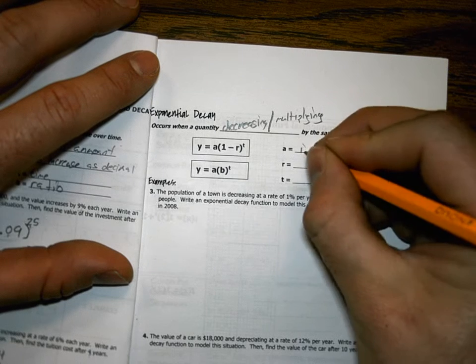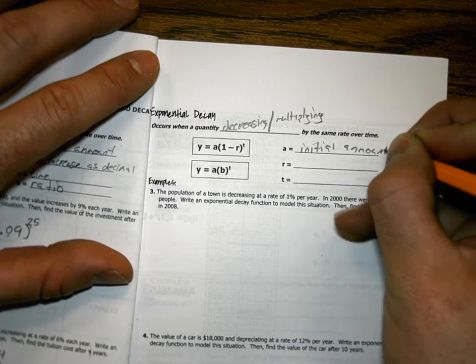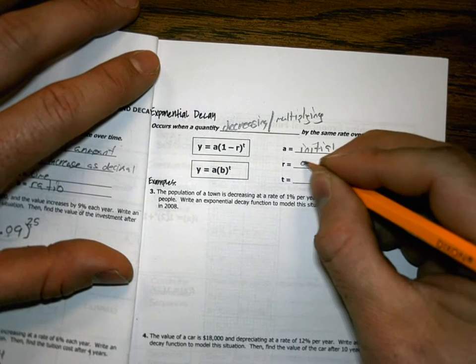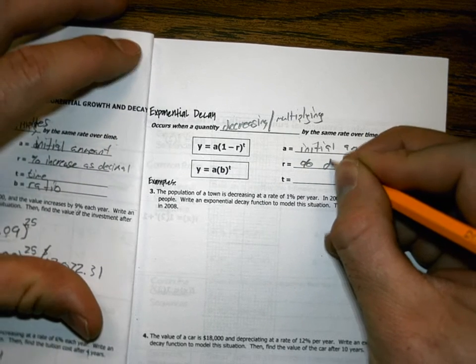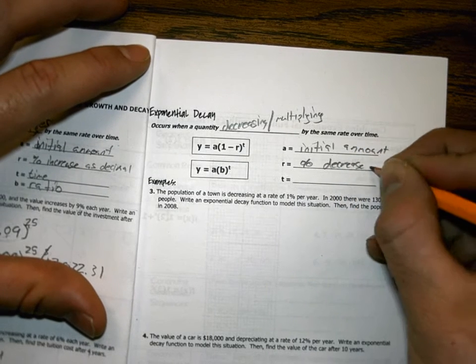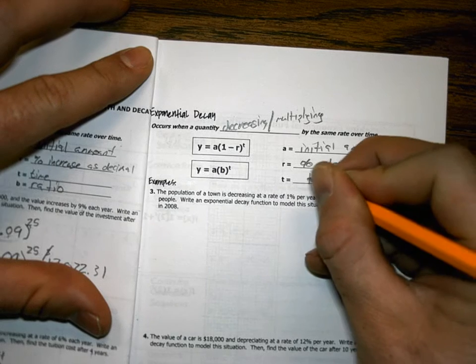A is still the initial amount. R is still percent decrease as decimal. T is still time.